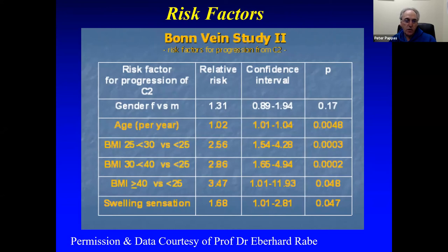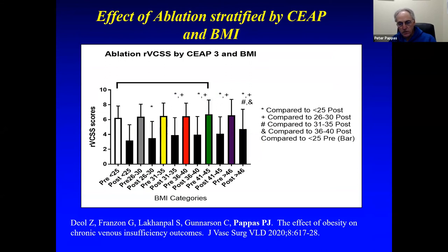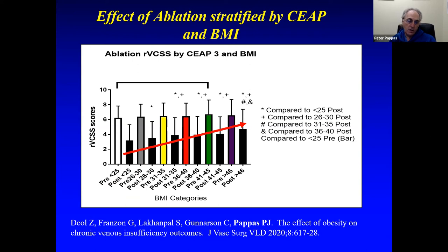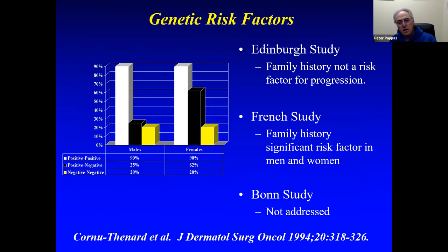Another paper looking at patients with higher BMIs examined outcomes after ablation or phlebectomy. As BMI increases, outcomes after treatment for CVI are not as good as in those with lower BMI. The paper suggested that patients with a BMI of 46 or greater should be considered for not having an ablation, as outcomes are poor — or at the very least should be counseled that their outcomes won't be as good, and they should focus on weight loss rather than ablation and phlebectomy.